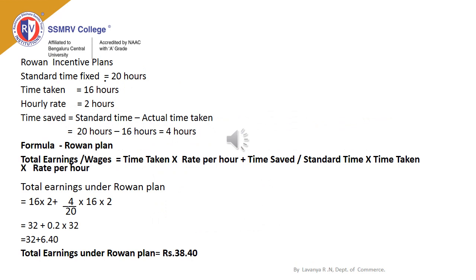We will discuss another simple problem under the Rowan Plan. Standard time allowed is 20 hours, time taken by the worker is 16 hours, and hourly rate is ₹2. You have to determine time saved by the worker. Standard hours minus actual hours taken by the worker equals time saved. Standard hours are 20 and actual hours are 16, so time saved by the worker is 4 hours. Using this information, we are calculating total earnings under the Rowan Plan. The formula is: time taken by the worker into rate per hour, plus time saved divided by standard time, into time taken into rate per hour.